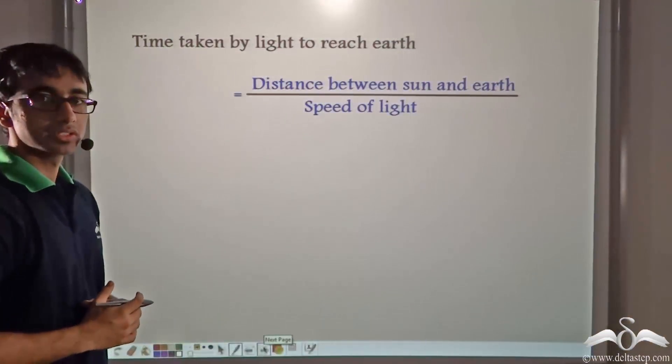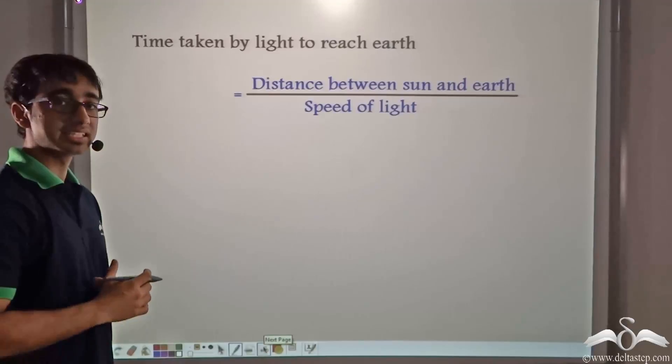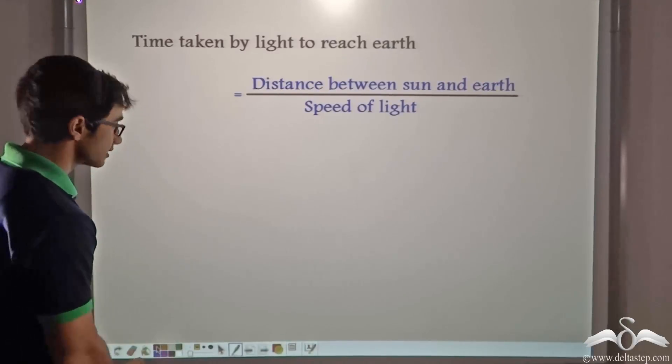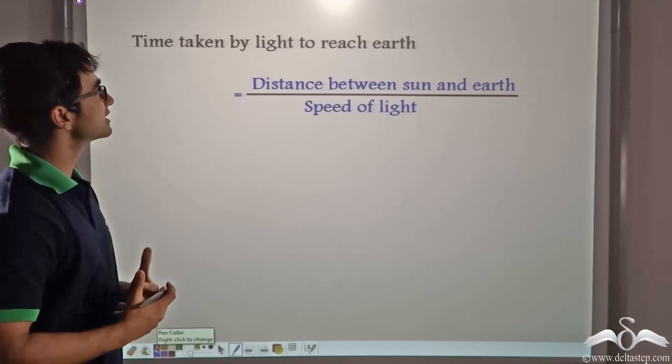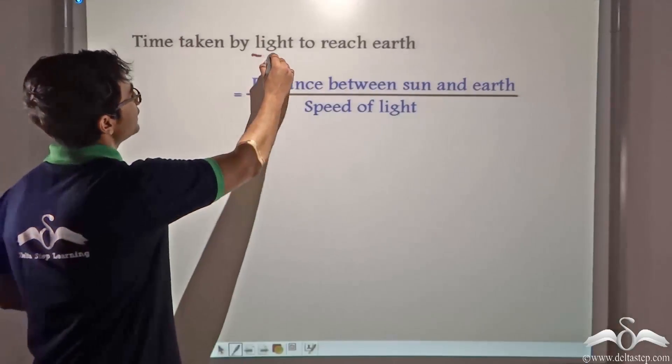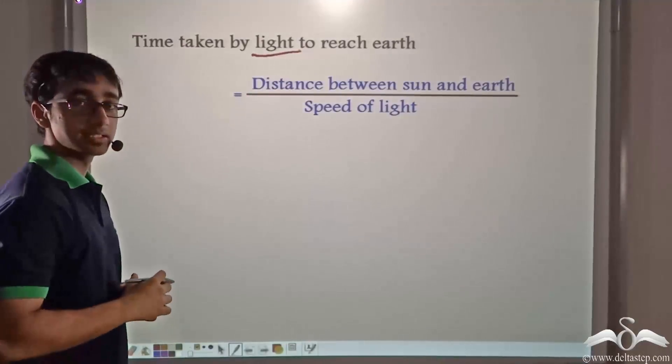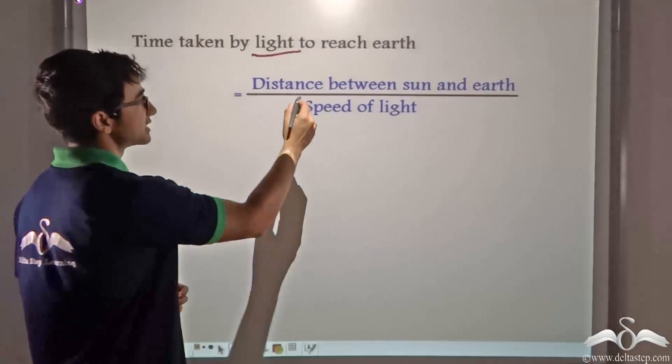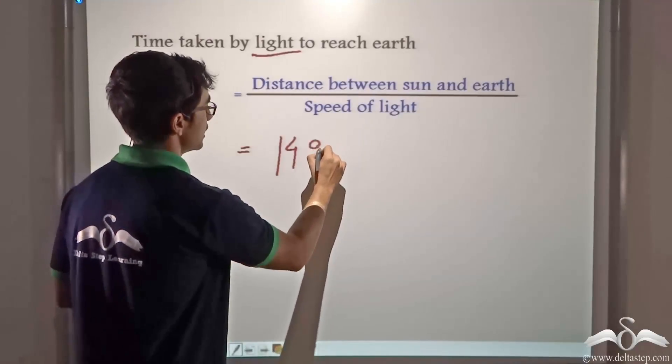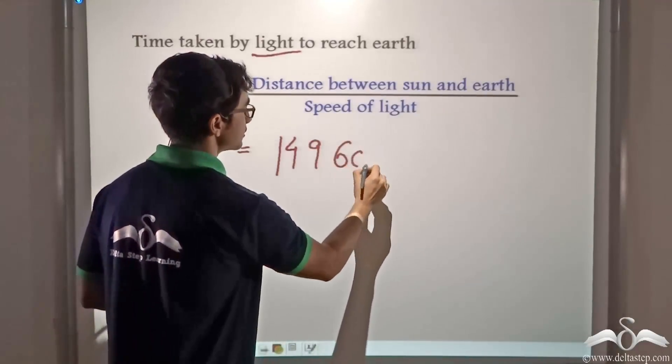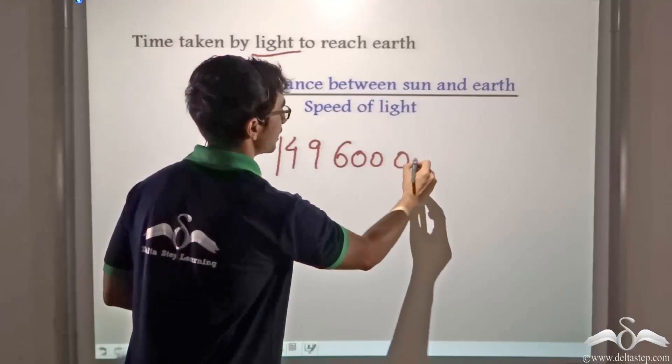We know that time taken is given by the distance between two objects divided by the speed. So in this case, the time taken by light to reach the earth will be given by the distance between sun and earth. And that was 149,600,000.